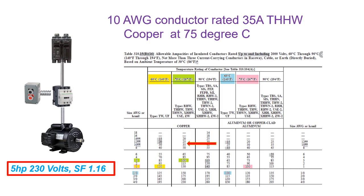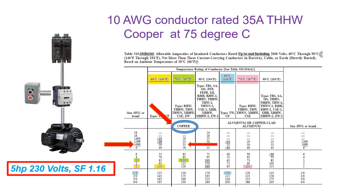Step 3: find the conductor using Table 310.15(B)(16). For 35 amperes with a copper conductor, remember that the default motor terminal rating is 75 degrees C as per NEC Table 110.14(C). The conductor selected is 10 AWG.